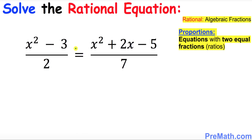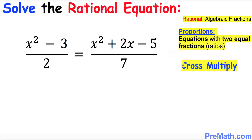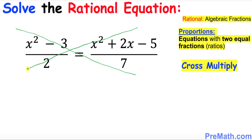Let's go ahead and solve this rational equation now. We will use the cross multiplication method — that means I'm going to cross multiply this way, crisscross, and then multiply the other way around.